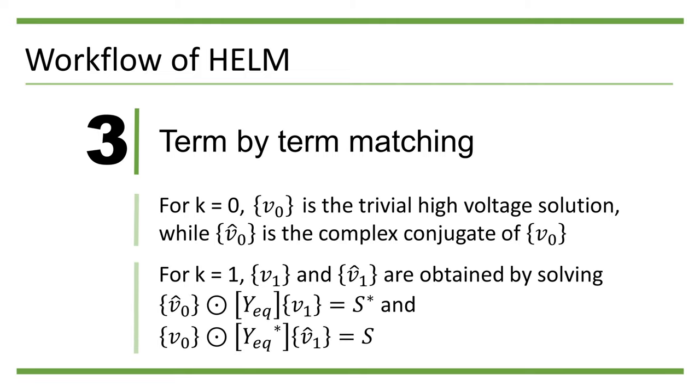For k = 1, the corresponding coefficient on the right-hand side of the power flow equation is S conjugate and S. So V1 and V̂1 are obtained by solving V̂0 ⊙ |Yeq|{V1} = S* and V0 ⊙ |Yeq|{V̂1} = S.